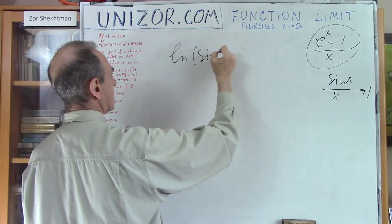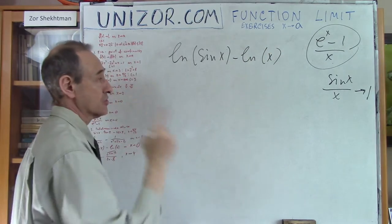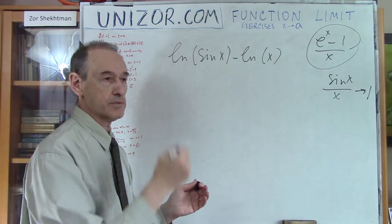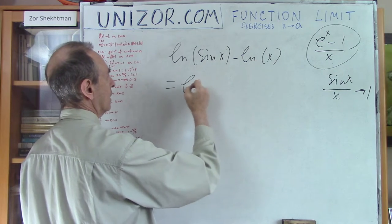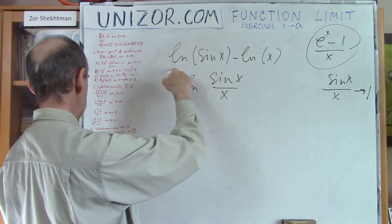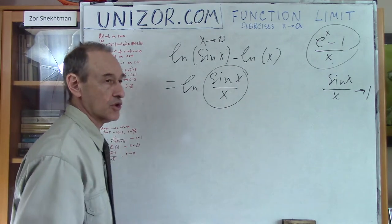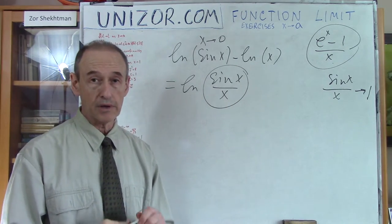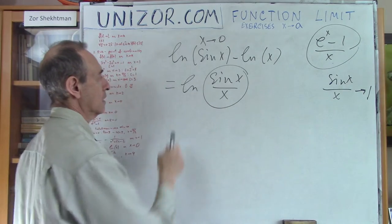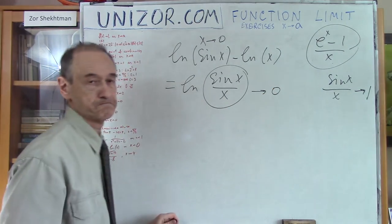Next: the natural logarithm of sin(x) minus the natural logarithm of x as x goes to 0. The difference of logarithms is the logarithm of the ratio, so this equals ln(sin(x)/x). As x goes to 0, sin(x)/x goes to 1, so the whole thing goes to ln(1), which is 0.